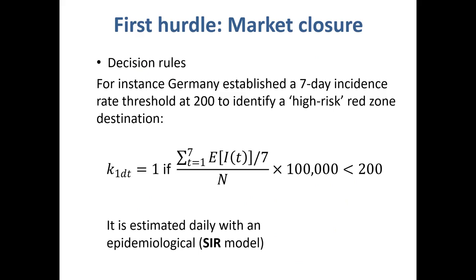The first hurdle depends on decision rules taken by the government. They are usually based on the incidence rate of the epidemic, and this incidence rate can be forecast with SEIR models.